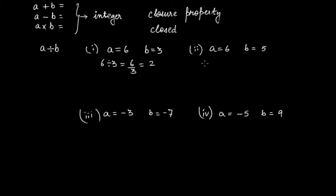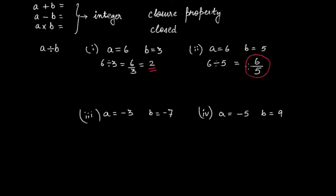For the second case, a divided by b gives 6 divided by 5. Is 6 fully divisible by 5? The answer is no. You will not get an integer — here you are getting a rational number, not an integer.